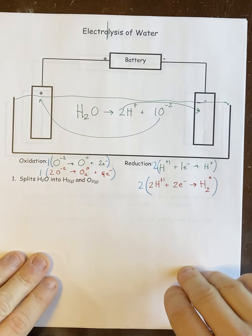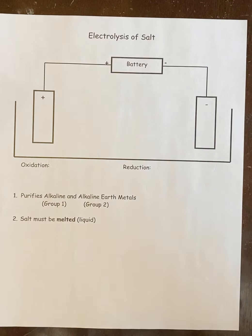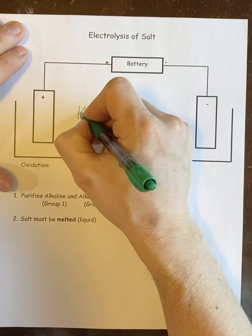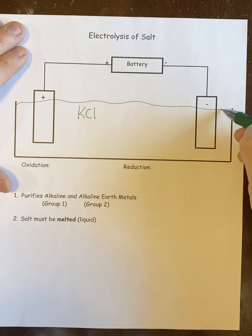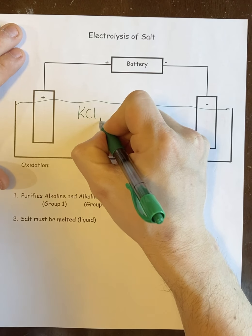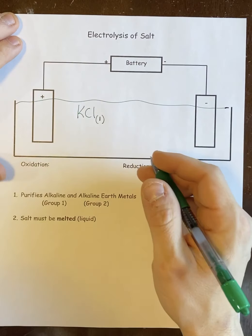And then the next application is electrolysis of salt. Same idea, except now we're going to use a salt. So when we use a salt, like for example, I'm going to use KCl, but we could use table salt. It doesn't matter. Now, with electrolysis of salt, there's one issue. The salt has to be in the liquid phase, and that typically requires very high temperatures to get liquefied salt. But it is possible and it can be done and it is done all the time.